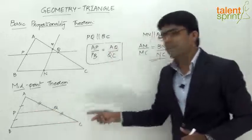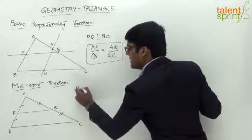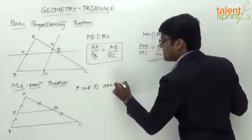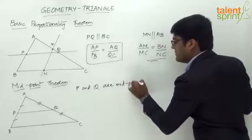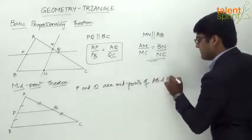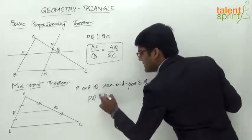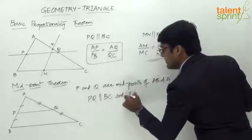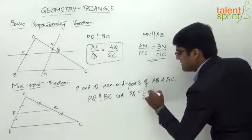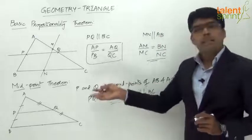PQ, the line obtained by joining the midpoints of two sides, will be parallel to the third side BC, and PQ will be half of BC. So if P and Q are midpoints of AB and AC, then PQ is parallel to BC and PQ = (1/2) BC. That's the Midpoint Theorem, and it applies to any two midpoints of a triangle.